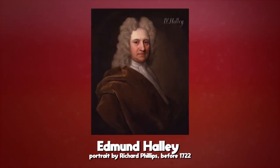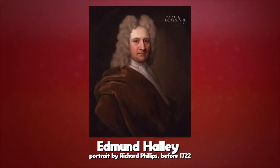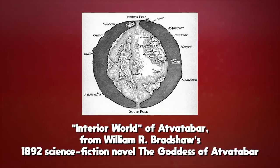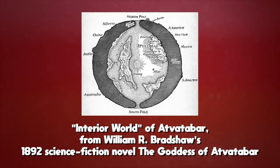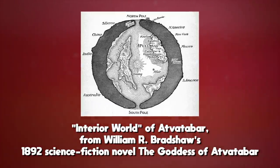The Hollow Earth theory has been around since the 17th century, when English scientist Edmund Halley — as in Halley's Comet — decided the answer to strange readings on his compass had to be that the Earth was made of spherical shells nested inside of one another, like Russian nesting dolls surrounding a central hollow core.